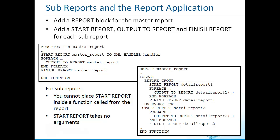If you look at the function that will call the master report, notice that its start report statement does take the argument to XML handler. The master report is responsible for the data streaming to the general report engine. The sub-reports are children of this master report. There are some additional restrictions when it comes to specifying sub-reports — you can read more in the General Report Writer documentation. When you have finished updating your report application, compile your file and generate a new RDD file.